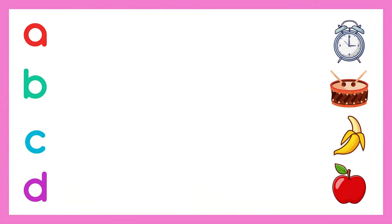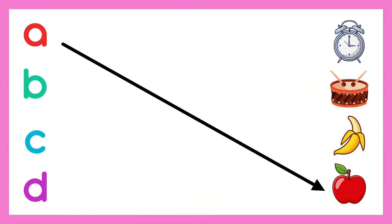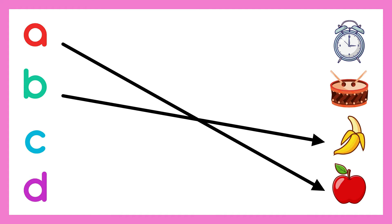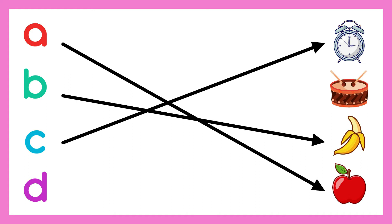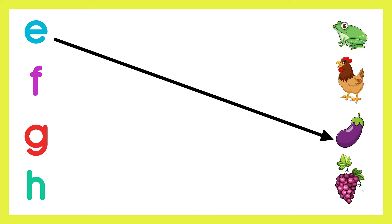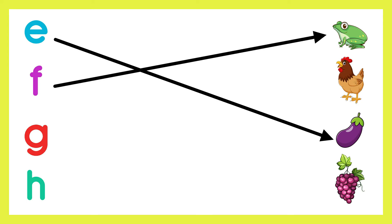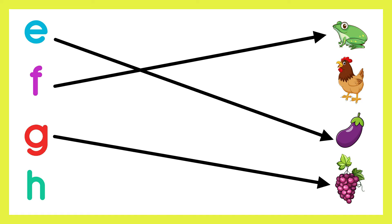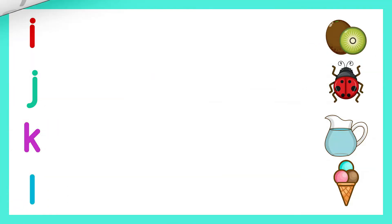A - Apple. B - Banana. C - Frog. D - Drum. E - Eggplant. F - Frog. G - Grapes. H - Hen.